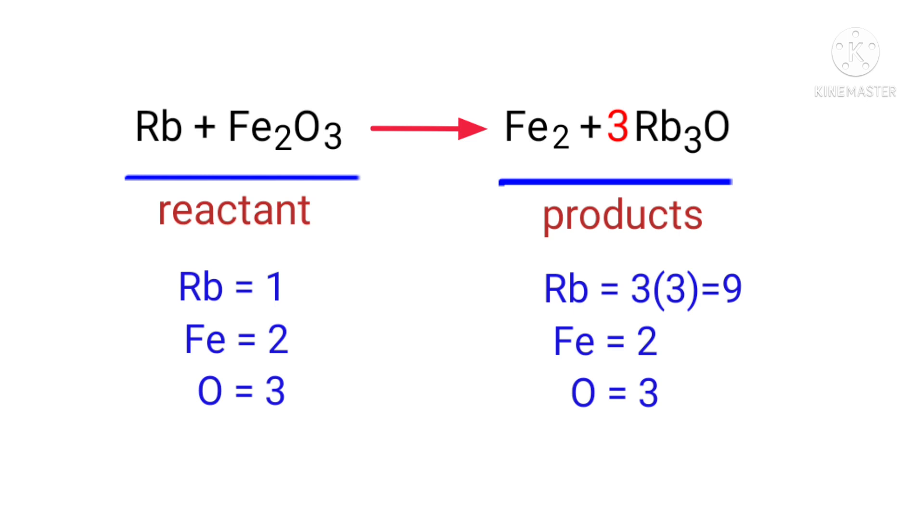The oxygen atoms are balanced. Now we need to balance the rubidium atoms. To do this, we need to put a coefficient of 9 in front of Rb.